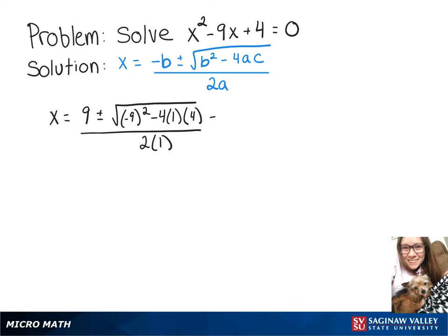When we simplify that, we'll have 9 plus or minus the square root of 81 minus 16 over 2.